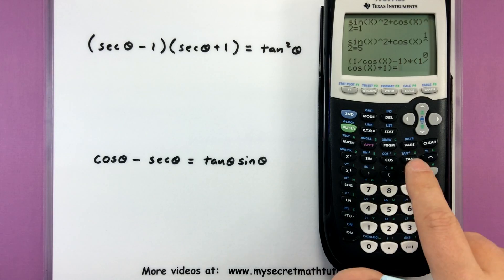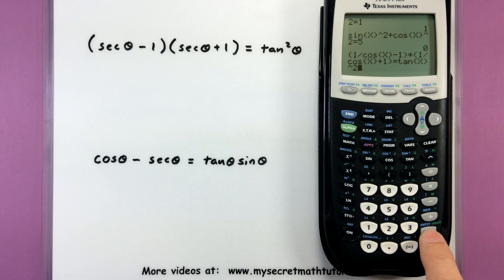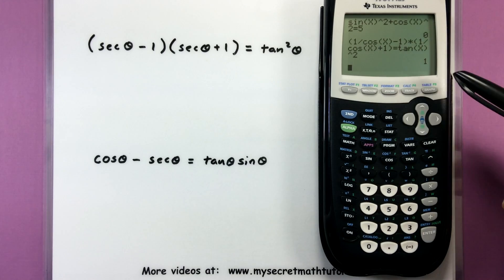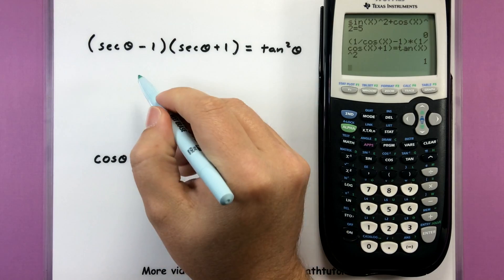There it is. So is it equal to tangent of x squared? Everything's typed in. It looks like it's giving me a one saying that, yes, this is a true identity. We are good.